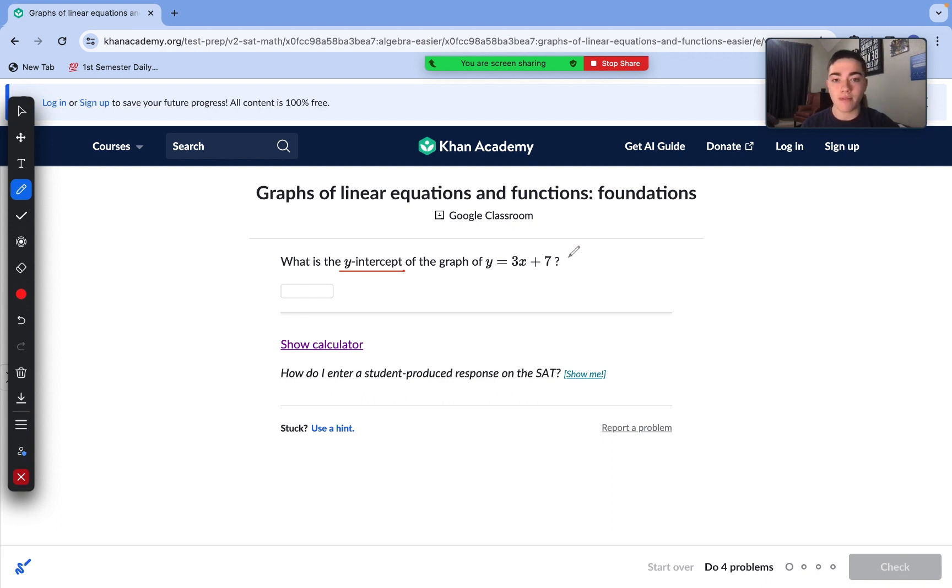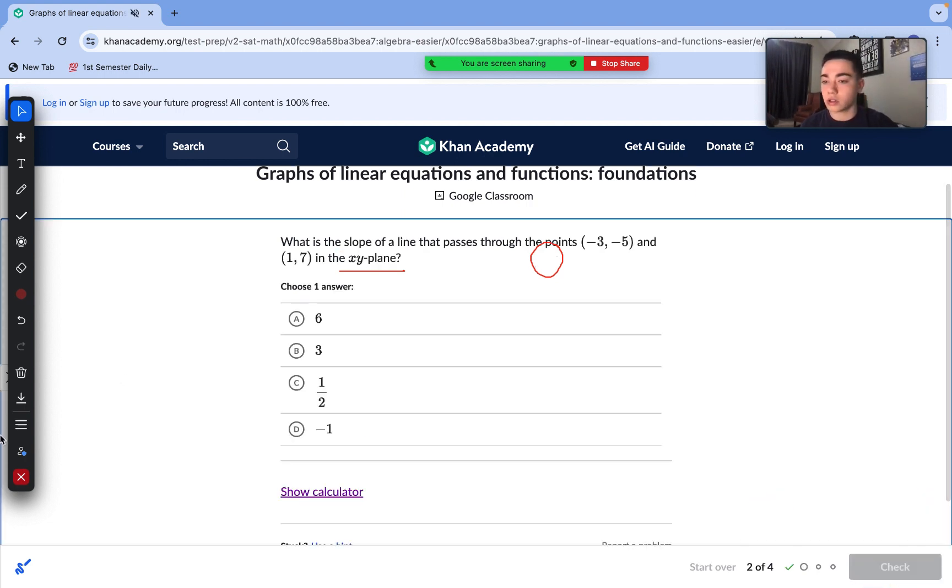As we notice, this is in our y equals mx plus b format. So, we only need to look, where is that b value? The b value is right here. Positive 7. So, that's our answer. 7.